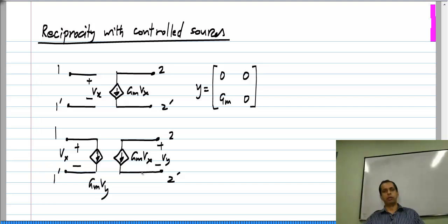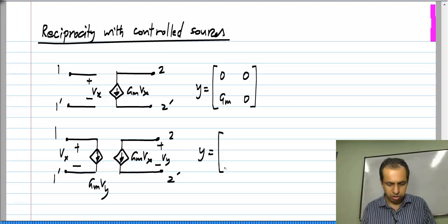Now you can evaluate the Y parameters of these two ports. I am not going to do that, but you can do that very easily. So Y would be 0, GM, GM, and 0.